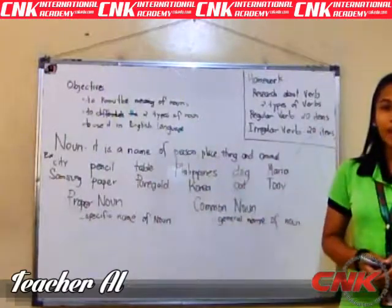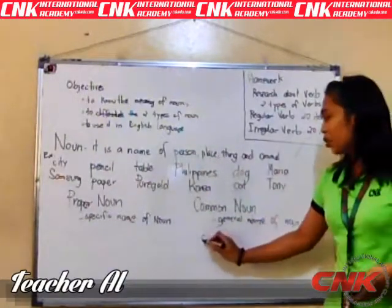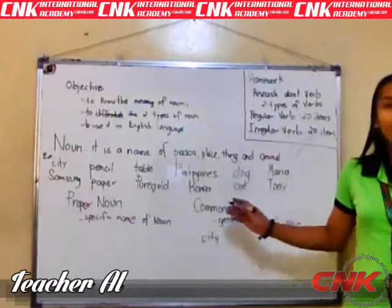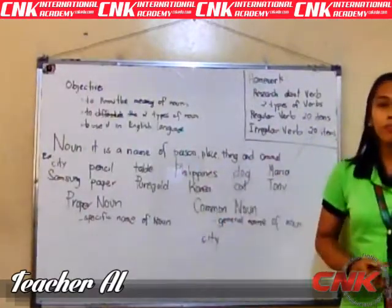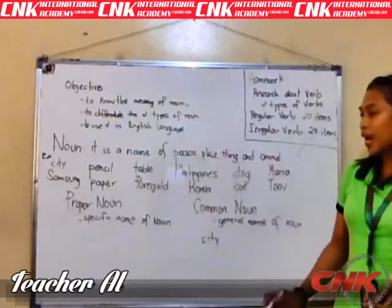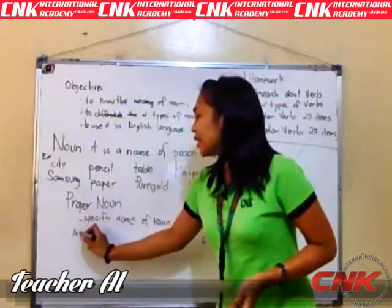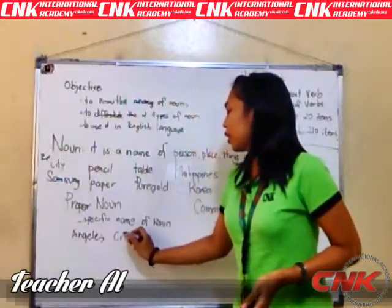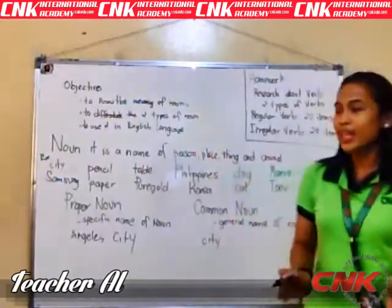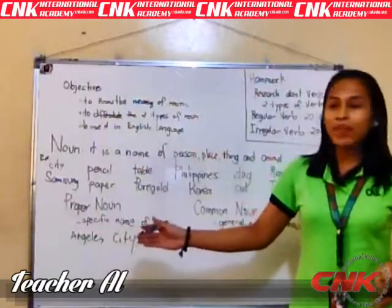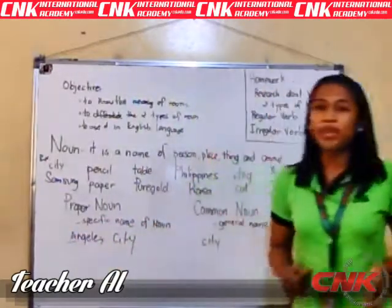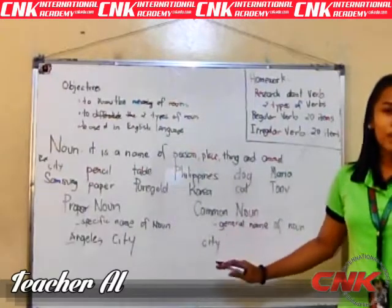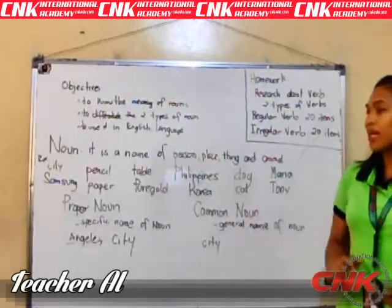For example, we have 'city' — city is a common noun. I will give you the counterpart of city in proper noun: we have Annulus City. As you can see, Annulus City begins with a capital letter because it is a proper noun, and 'city' begins with a small letter because it is a common noun.